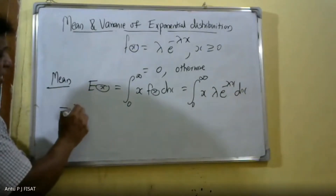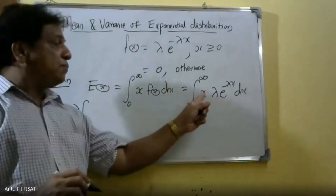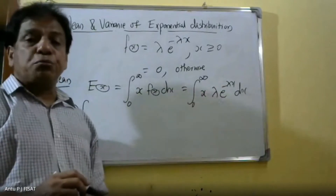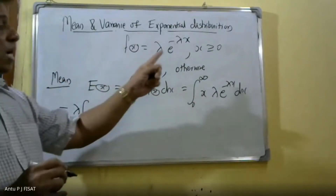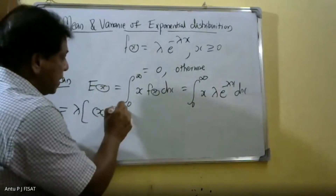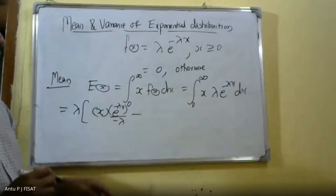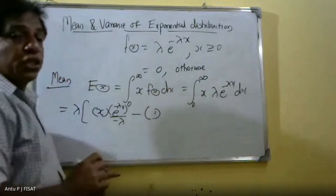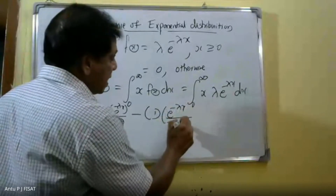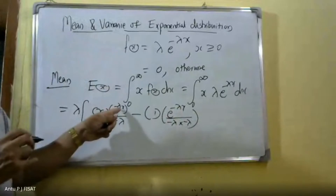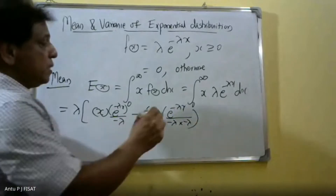Taking λ outside, we apply the general rule for integration by parts. We take x as the first function and e^(−λx) as the second function. Applying integration by parts: x·(e^(−λx)/(−λ)) minus the integral of 1·(e^(−λx)/(−λ)) dx, which gives e^(−λx)/(−λ)·(−λ). The integration part is complete.